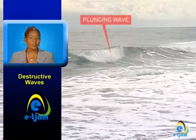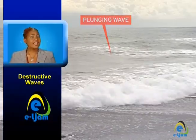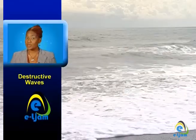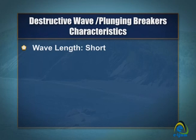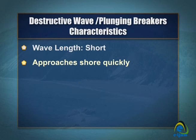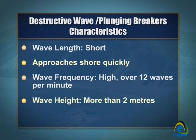On the other hand, destructive waves are called plunging breakers because they plunge when breaking, and they break violently as they approach a steeply sloping beach. The destructive wave's wavelength is also noticeably shorter than the constructive wave's wavelength, because the waves approach the shore more rapidly. This rapid approach also means that the wave frequency is higher than its counterpart, with over 12 waves per minute. The wave height is also much higher, being over two meters.